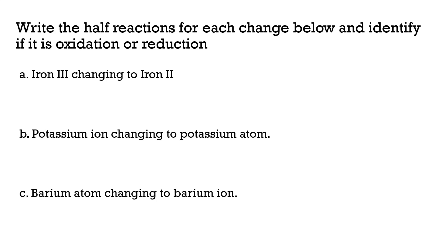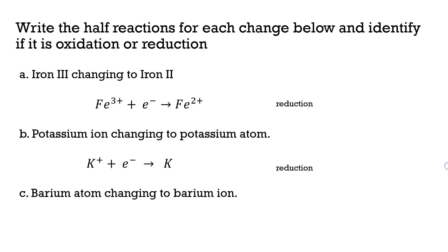Let's practice writing half reactions. Fe³⁺ going to Fe²⁺ is a gain of one electron — that is reduction. Potassium ion going to potassium metal is also a gain of electrons, so that is also reduction. And barium atom changing to barium ion involves a loss of electrons — the electrons are on the product side — so that is oxidation.